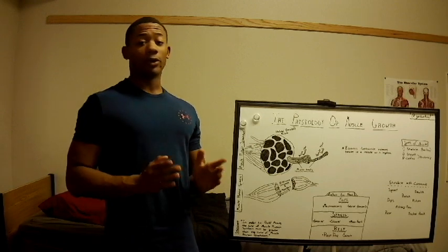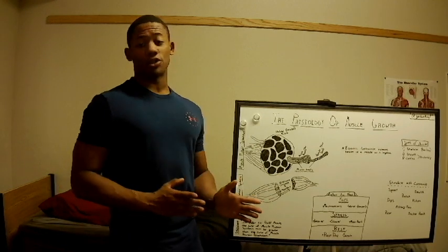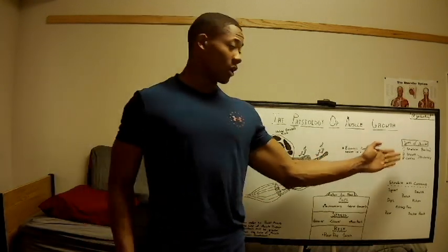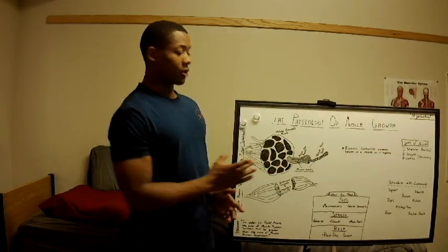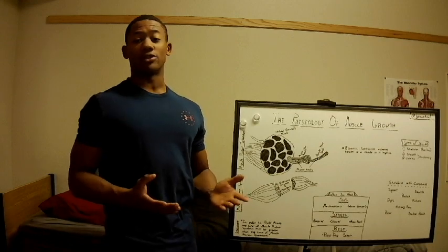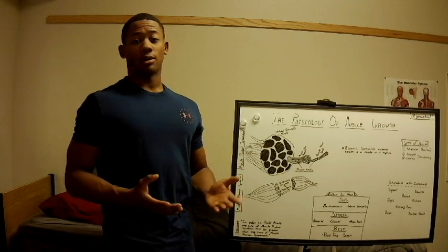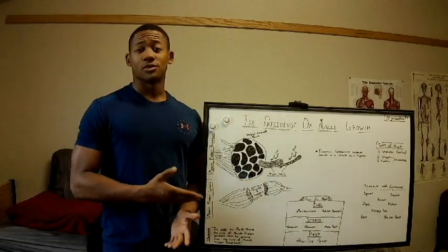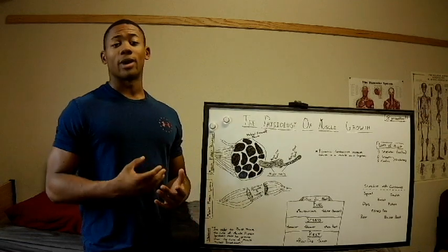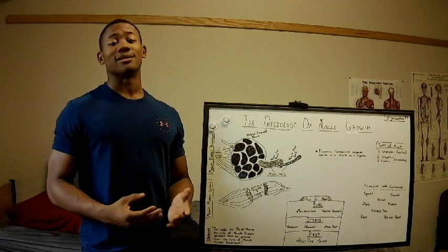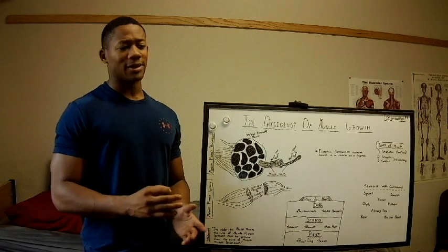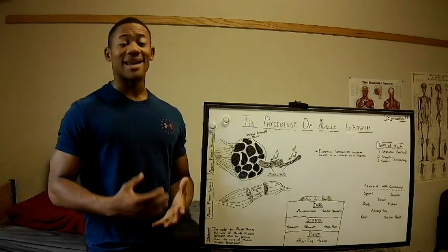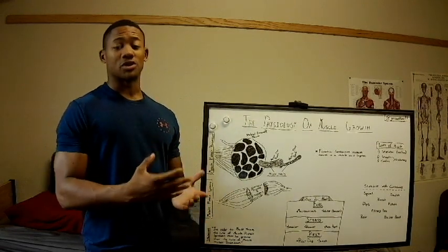Skeletal muscle is one of three major types of muscle tissue in the body, with the others being smooth and cardiac muscle. Skeletal muscle is a striated muscle tissue under voluntary control of the somatic nervous system. Skeletal muscles are attached to bone by a bundle of fibers called tendons. Ligaments connect bone to bone, and tendons connect bone to muscle.